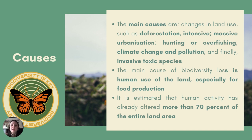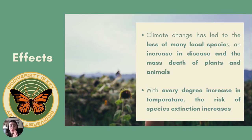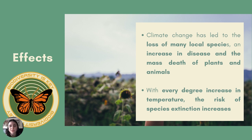For many plant and animal species, this means loss of habitat and possible extinction. Climate change has transformed marine, terrestrial, and freshwater ecosystems around the world, and has led to the loss of many local species. High temperatures have caused many animals and plants to flee to higher elevations, such as the poles, which has had a major impact on ecosystems.